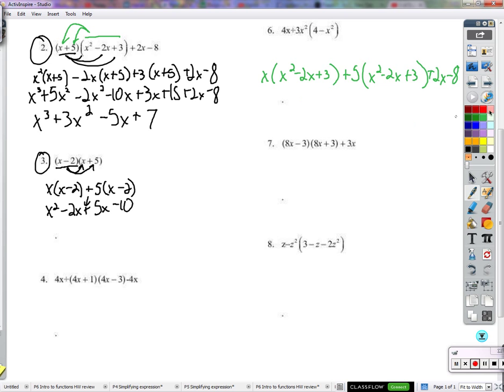Let's do it this way. Distribute the x into this big parentheses now. x times x squared is x to the 3rd. x times negative 2x is negative 2x squared. x times 3 is 3x. Plus 5 times x squared is 5x squared. 5 times negative 2x is negative 10x. 5 times 3 is 15 plus 2x minus 8.